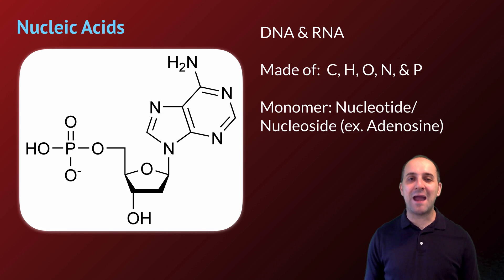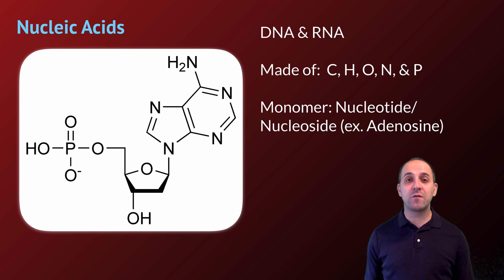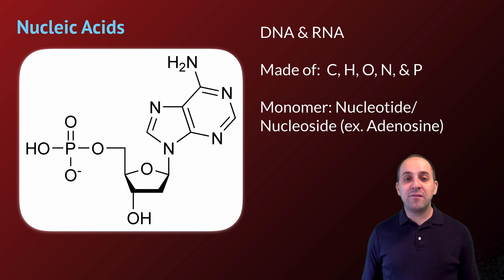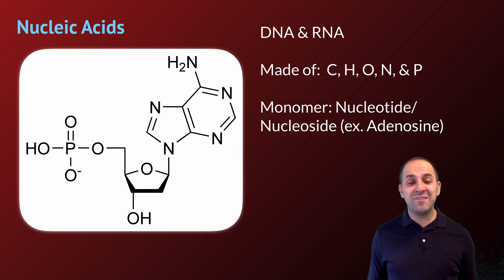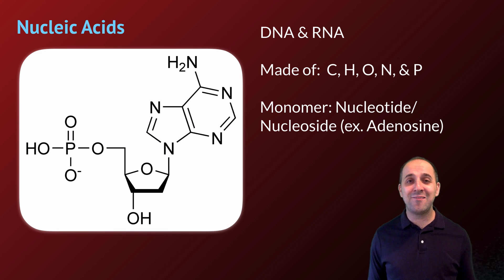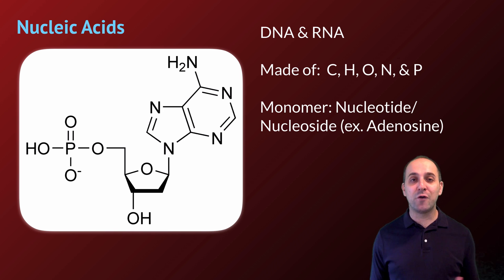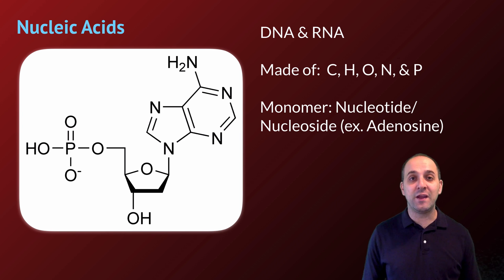We're going to start by talking about nucleic acids. Nucleic acids are DNA molecules and RNA molecules, and these are made out of carbon, hydrogen, oxygen, but also nitrogen and phosphorus. Nucleic acids are technically the polymers of nucleotide monomers. I've got one example of a nucleotide monomer here — this is the nucleotide known as adenine. For reasons you don't really need to worry about, when nucleotides exist by themselves, they're referred to as nucleosides, so technically this isn't adenine, it's adenosine. These terms are functionally interchangeable, but for the purpose of our discussion, I'm going to use the term nucleotide.